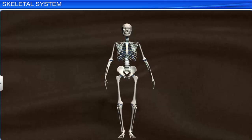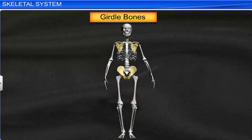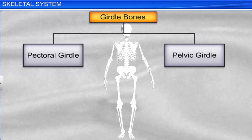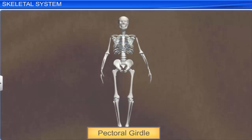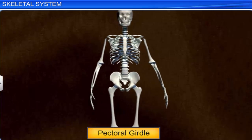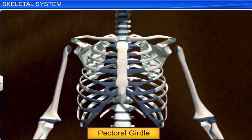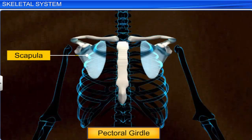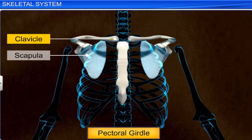The remaining 6 bones form the girdle bones, which articulate the limb bones to the axial skeleton. There are two girdles: the pectoral, or shoulder girdle, and the pelvic, or hip girdle. Each half of the pectoral girdle consists of a flat, large, triangular scapula, and a curved, slender clavicle, or collar bone.